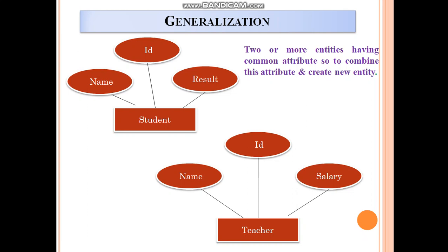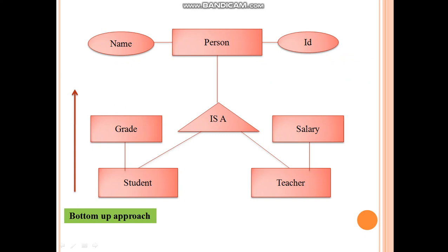Generalization in DBMS: what is generalization? Generalization is nothing but two or more entities having common attributes. Here, student and teacher are the two entities, and the common attributes are name and ID. To combine them and create a new entity is nothing but generalization.